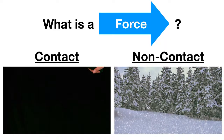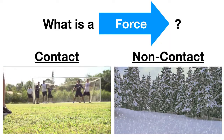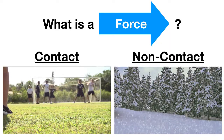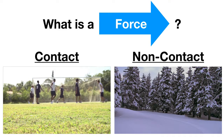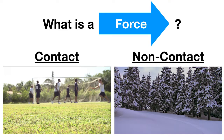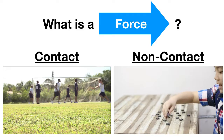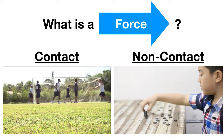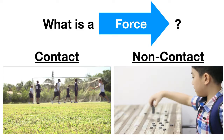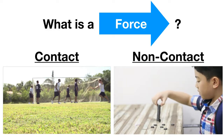Here are some more examples. In this video, a boy is kicking a soccer ball. He is making contact with the soccer ball and causing it to move. And in this example, a boy is playing with magnets. The magnets are never actually touching, but they're still pulling each other up off the table.